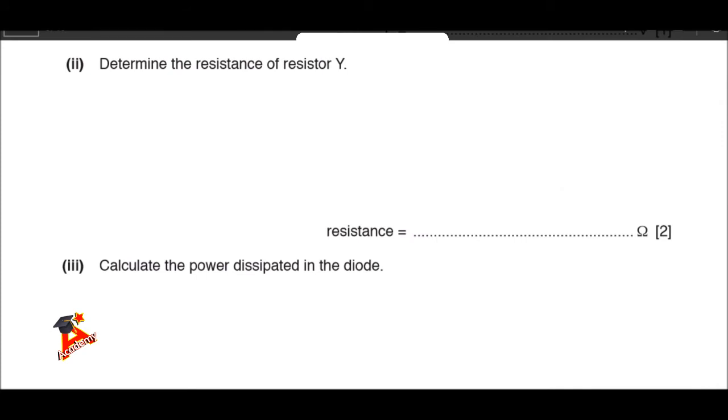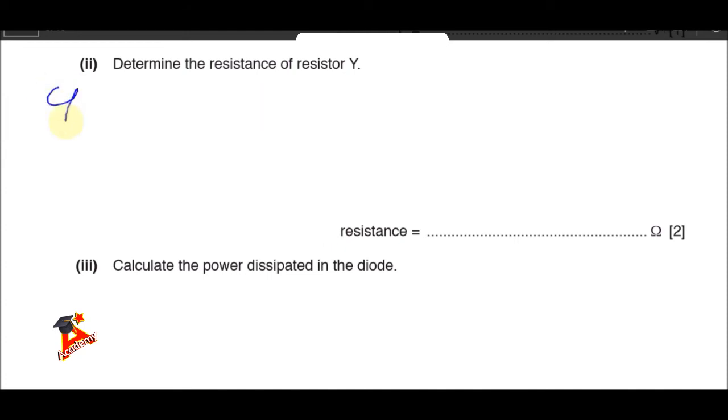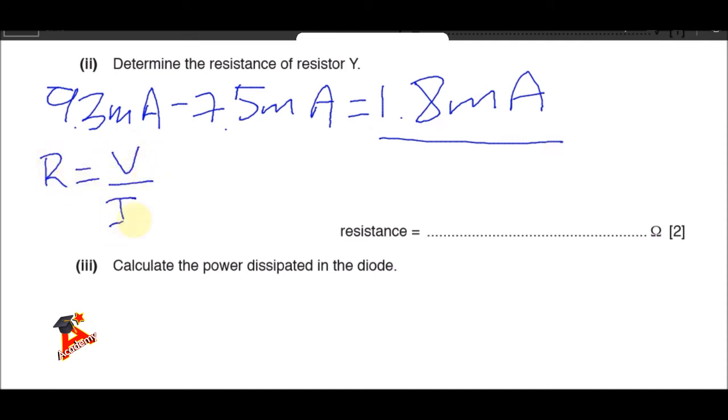The question says, determine the resistance of resistor Y. We know that the current passing through Y can be obtained from the current's law. Currents entering a junction are equal to currents leaving. We have currents of 9.3 entering the junction, which means the difference between 9.3 and 7.5 milliamps is the current that enters through Y. So this is the current passing through Y, and that current, we have E which was 0.9 volts divided by 1.8 milliamps, and that gives us 500 ohms.